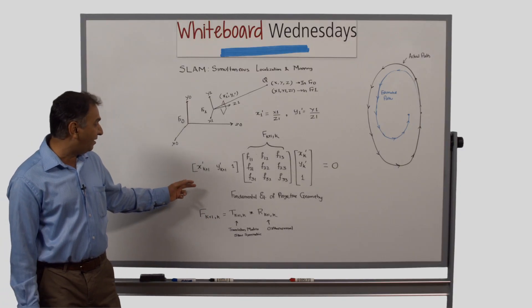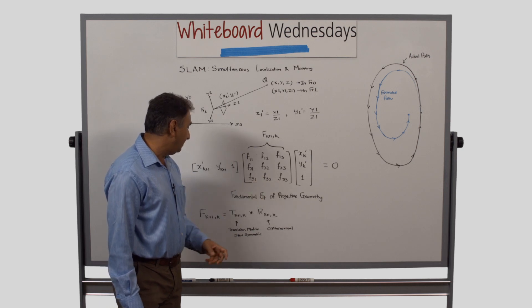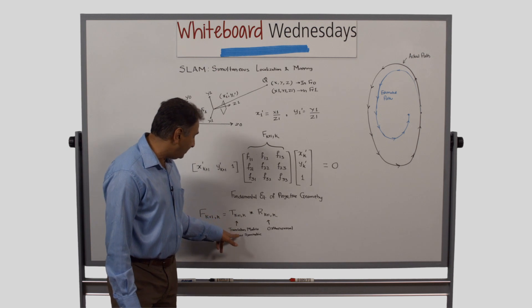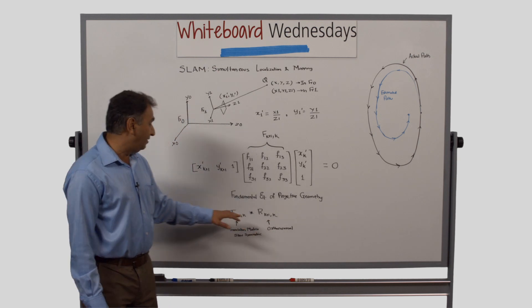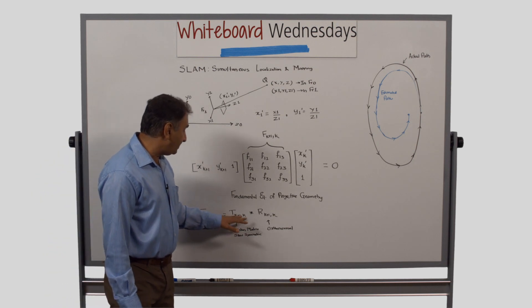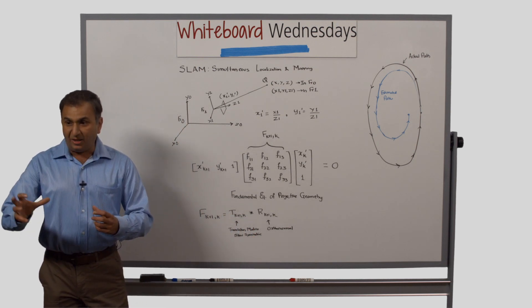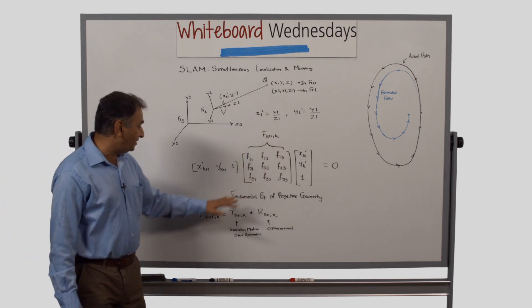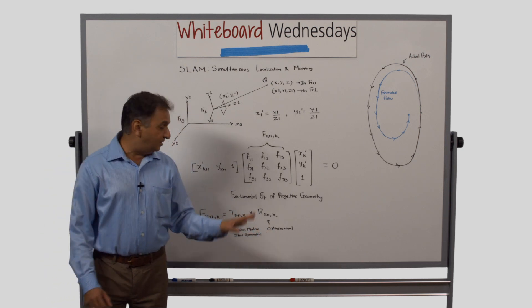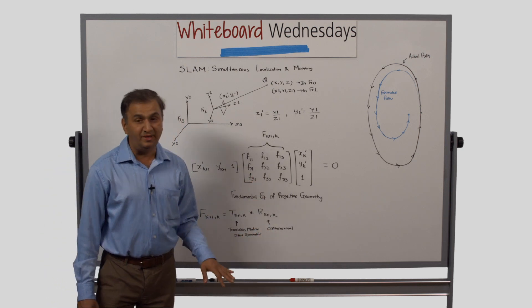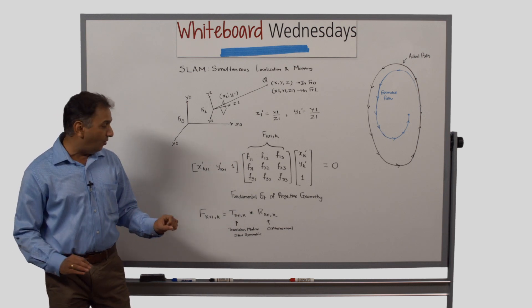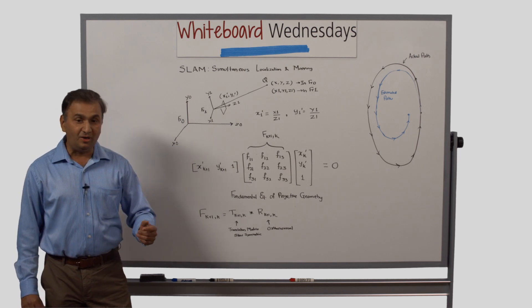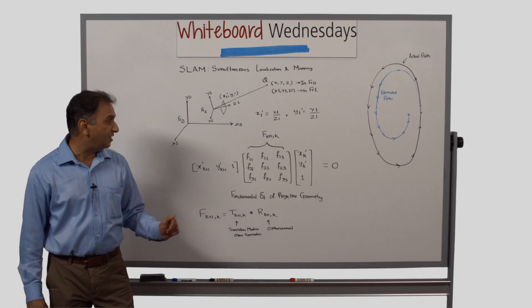Using linear algebra, we get an estimate of this fundamental matrix, and this fundamental matrix itself can now be factored into a translation matrix and a rotation matrix. And this translation matrix actually gives us the path of the camera from frame k to frame k plus 1. Now, solving this equation and factoring the fundamental matrix into two sub matrices, all this requires a lot of floating point linear algebra. And this is one of the key justifications for doubling the floating point support in the Vision Q7 processors.